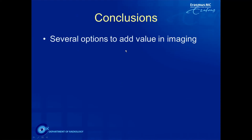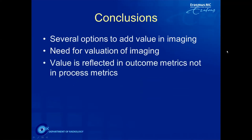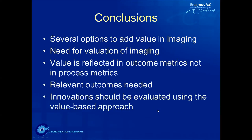In conclusion, we have several options to add value in imaging: imaging appropriateness, reporting, integrated diagnostics, and artificial intelligence. But there is definitely a need for valuation of imaging. Value is reflected in outcome metrics — for example, mortality or number of complications avoided using radiology — not in process metrics. We need relevant imaging-specific outcome measures, and innovations such as radiomics, AI, and integrated diagnostics should be evaluated using a value-based approach to ensure they add as much value for the patient as possible.